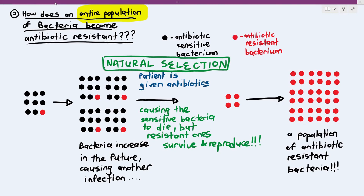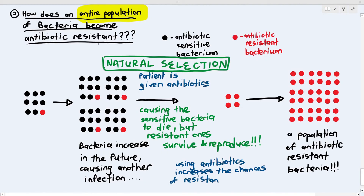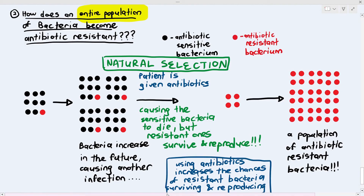Now the patient is in trouble because there is a population of resistant bacteria causing problems. No matter how many tablets of antibiotics the patient takes, the antibiotic is no longer working. This process is known as natural selection, where using antibiotics increases the chances of resistant bacteria to survive and reproduce.